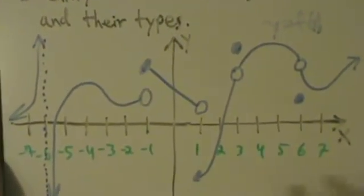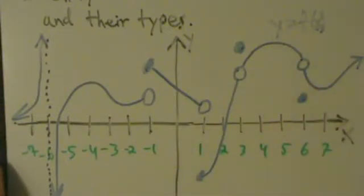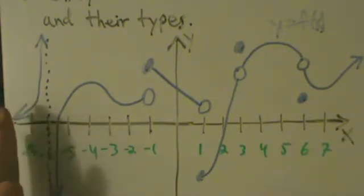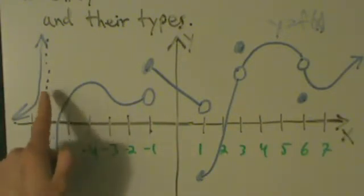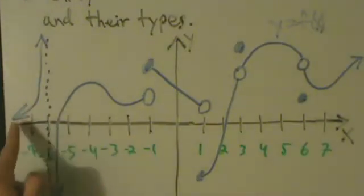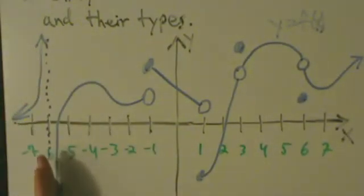So we've got this big old graph here. Here's our function, y equals f of x. So let's just go from left to right and see what we have here. So starting at the left, the first thing we see here is this vertical asymptote. So this piece here, this is nice and continuous here, nothing crazy happening there. But now we have this vertical asymptote. So this is an infinite discontinuity here.